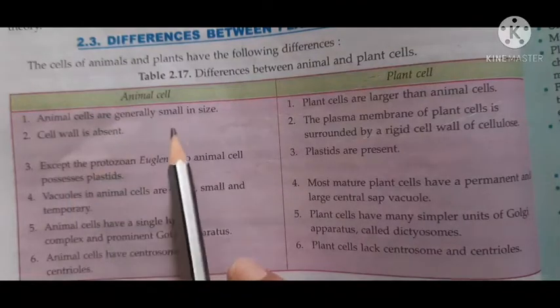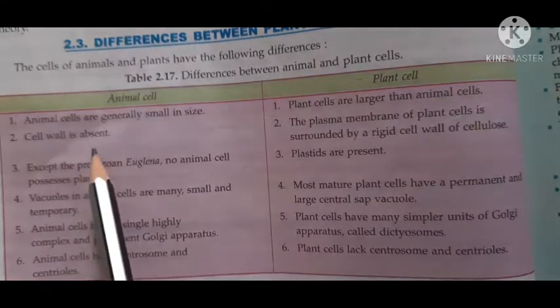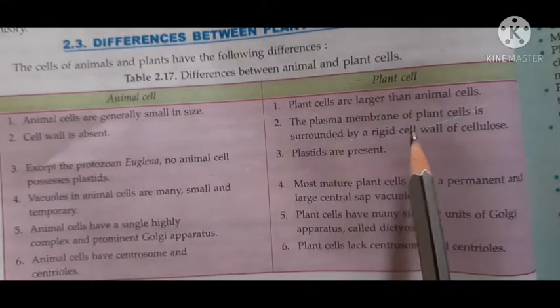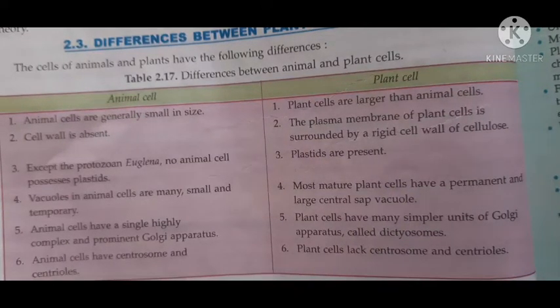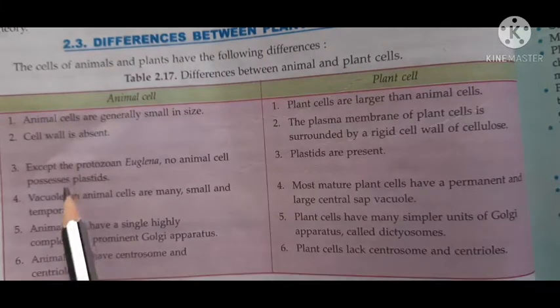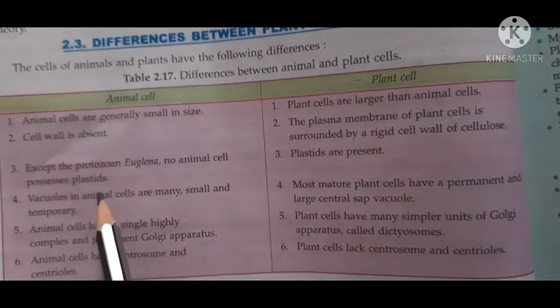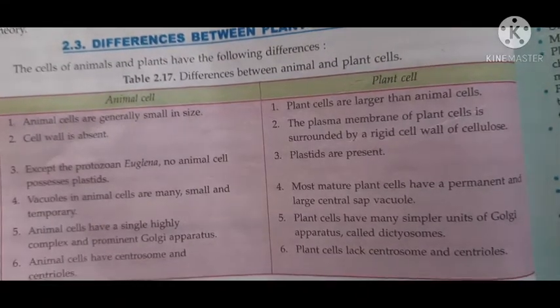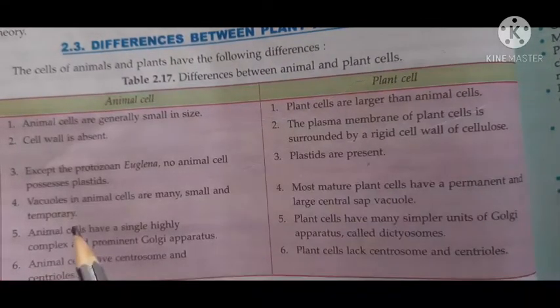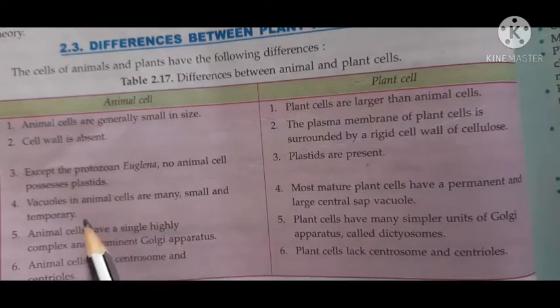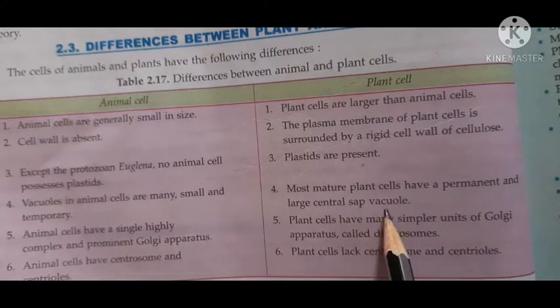You can write: animal cells are generally small in size, plant cells are larger than animal cells. Cell wall is absent in animal cell. A plasma membrane of plant cell is surrounded by a rigid cell wall of cellulose, or you can say cell wall is present in plant cell. Except the protozoans euglena, no animal cell possesses plastids. So animal cells generally don't have plastids. Plastids are present in plant cells. Vacuoles in animal cells are many, small, and temporary.